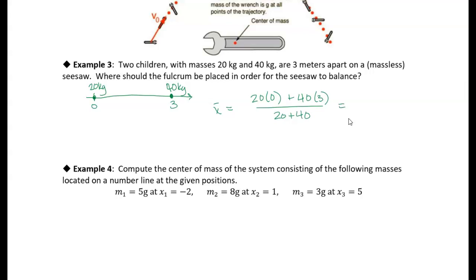The first term is zero — the 20-kilogram child at the origin contributes no rotational tendency. The 40-kilogram child does have a moment about the origin. The numerator works out to 120 and the denominator is 60, giving a center of mass at 2 meters. That's 2 meters from the end where the 20-kilogram child is sitting, so that's where we should place the fulcrum for the seesaw to balance.